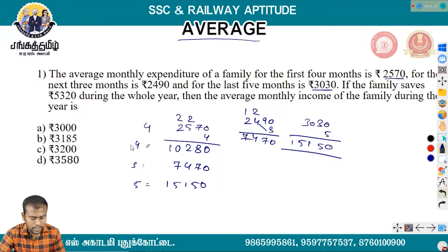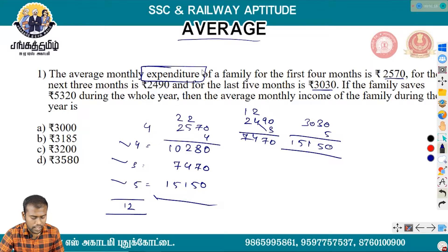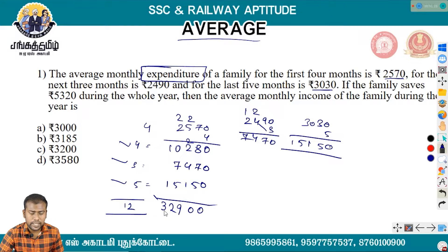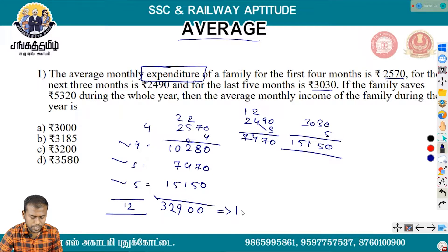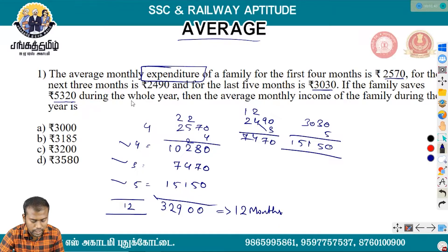Now, what does this month add? It is 18 months of expenditure. So the total combined expenditure across the year is calculated: the total comes to 32,900. This is the amount for the whole year.